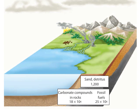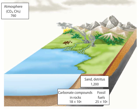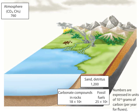In contrast, the atmosphere contains relatively little carbon, and it is in the form of carbon dioxide and methane. The quantities of carbon held in or exchanged annually by the ecosystem compartments are expressed in units of 10 to the 15th grams.